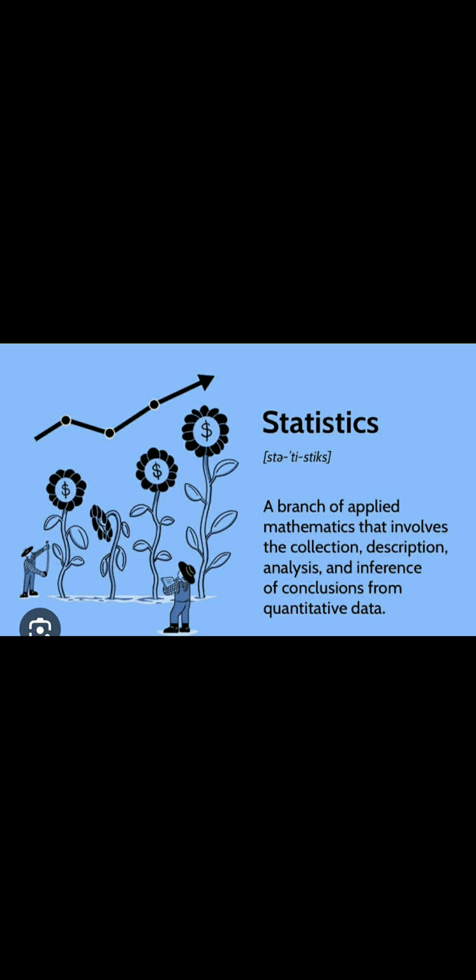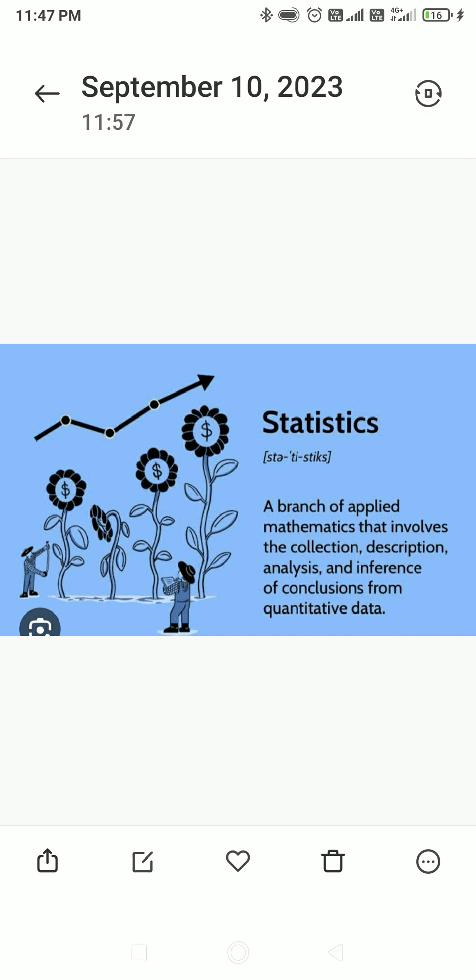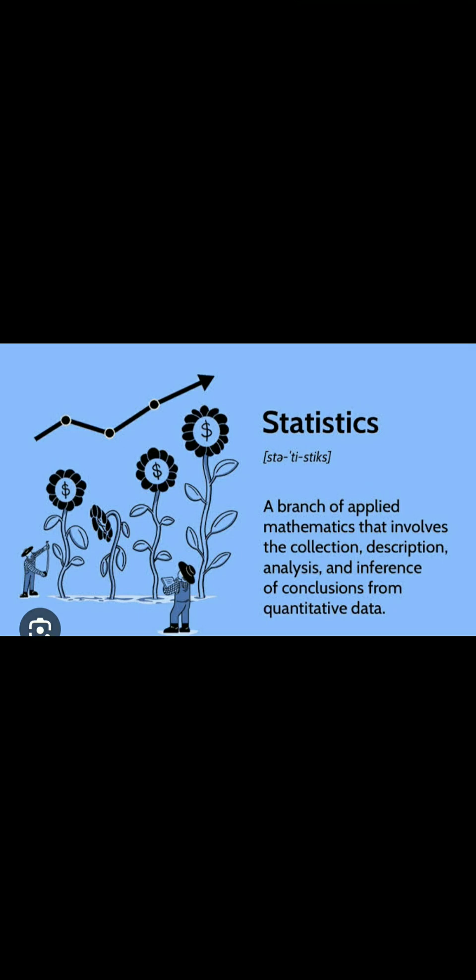So that means we are gathering some information, arranging the information, analyzing the information, and giving a comment on the information. For example, we select the marks of the students in our college. We collect that information, arrange the data, and then analyze it — who gets the first rank, who gets the second rank — we show the banners. So that we can call as statistics.